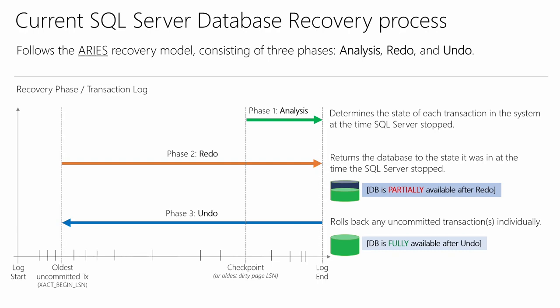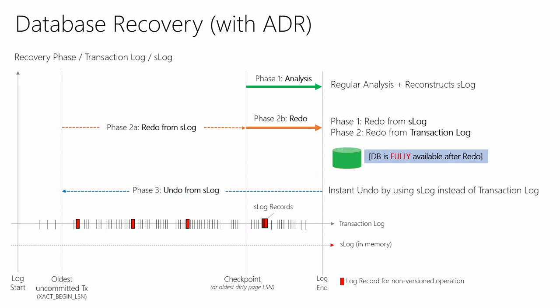Along the bottom you see the log record with different events. ADR changes that a lot. We have the persistent version store — you'll see it referenced as PVS. When we put that out in the previews, the PVS lived in the primary file group with no ability to change that. We got feedback that customers would like to specify which file group it lives in — if you've got a bulk file group or a very fast file group. So now with the release candidate and the GA version, you'll be able to specify which file group and change it.